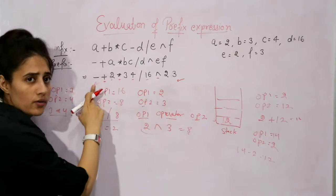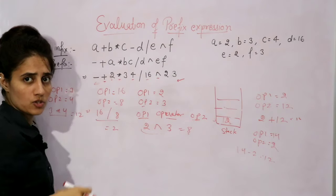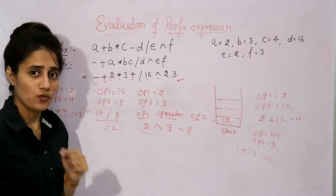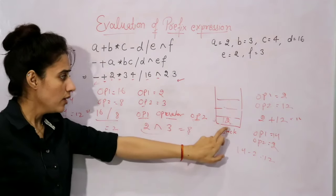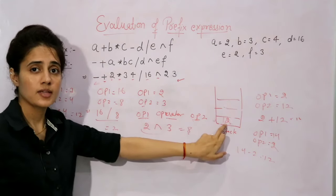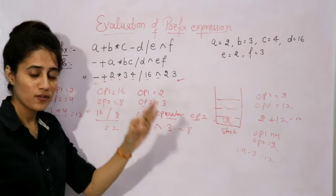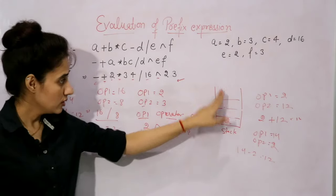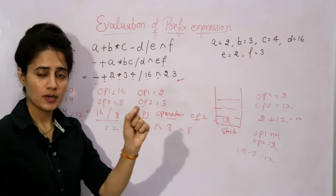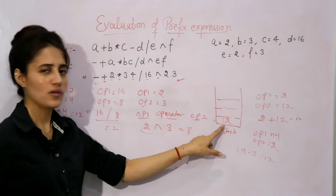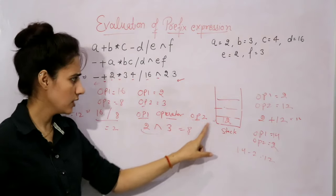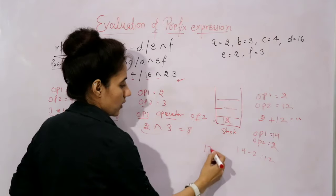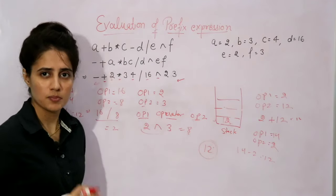We have reached the end of the expression. Now, if there is only one value in the stack, it means it is a valid prefix expression and you have evaluated it correctly. In the stack I have only one value — simply return the top of the stack. The answer is twelve, and the stack becomes empty.